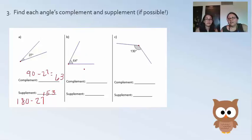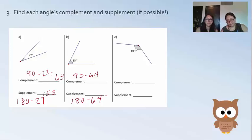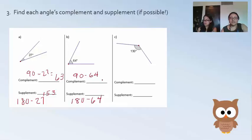Moving on to the next example, we have 64 degrees. To find the complement, we do 90 minus 64, and the supplement would be 180 minus 64. So 90 minus 64 equals 26, and 180 minus 64 equals 116.